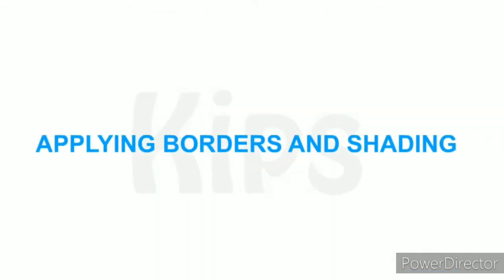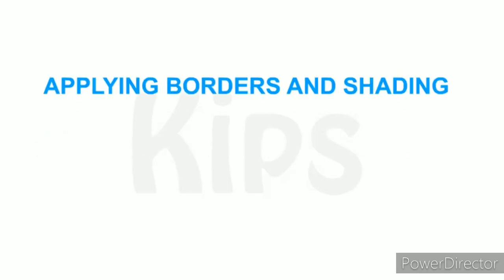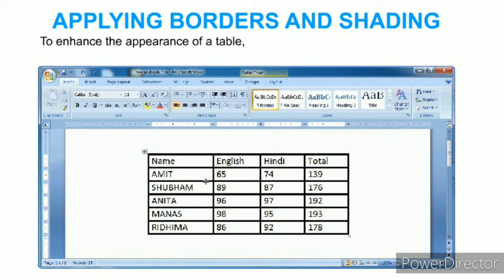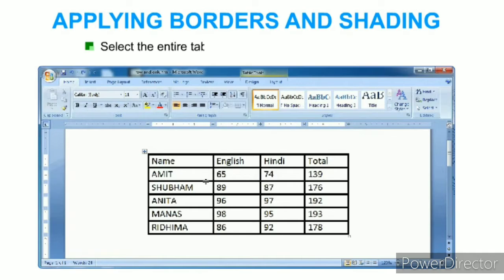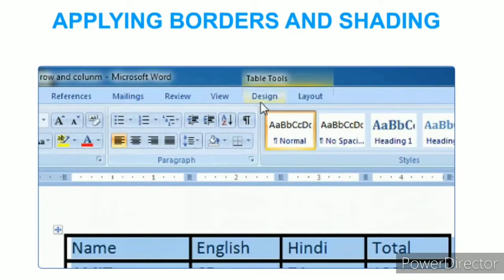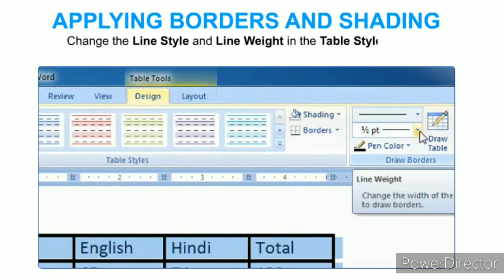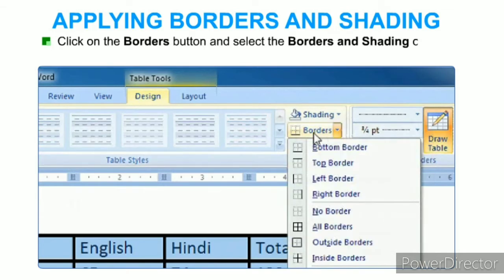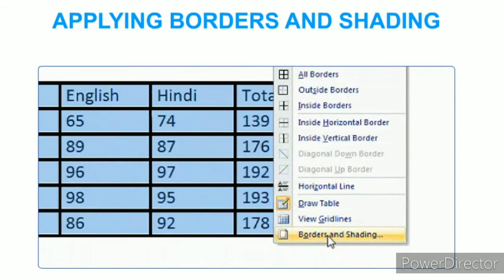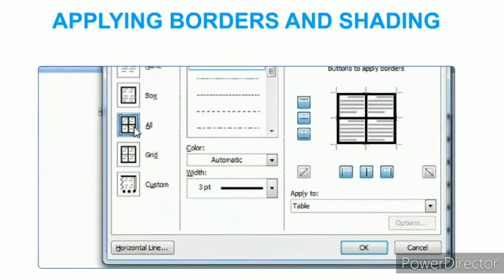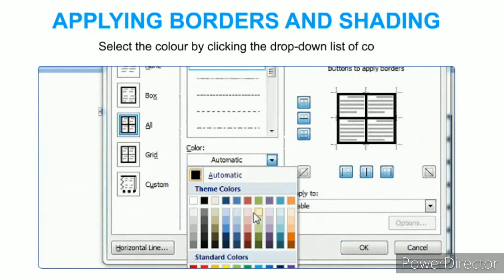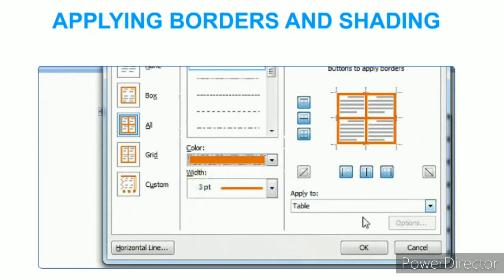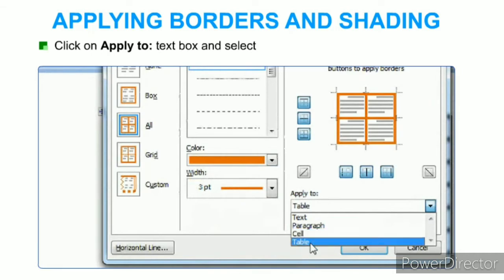To apply borders and shading to enhance the appearance of a table, select the entire table by clicking the table move handle. Change the line style and line weight in the Table Styles group on the Design tab. Click the Borders button and select the Border Shading option from the drop-down list, choose the All option, select the color from the Color drop-down list, click Apply To and select Table from the drop-down list, then click OK.